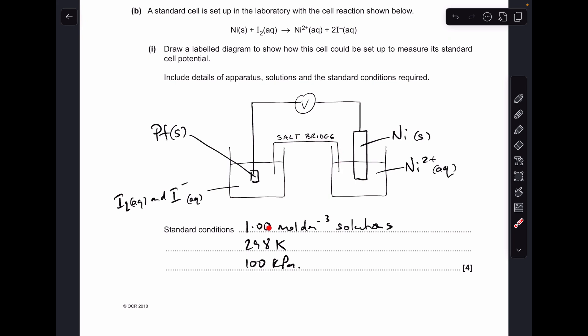Standard conditions: one mole per decimeter cubed for your solutions, 298 Kelvin, or you could say 25 degrees C if you want. And I don't think this was essential, but it's a good idea to put it in anyway so you don't forget, 100 kilopascals of pressure.